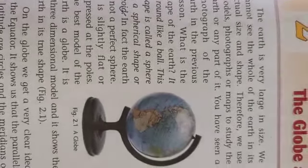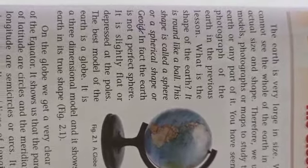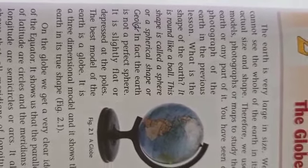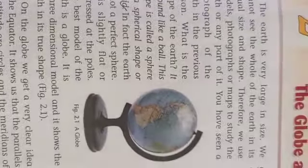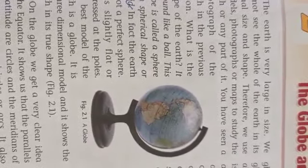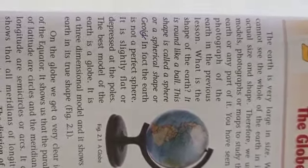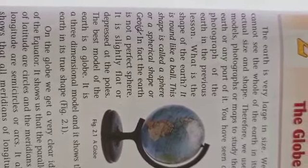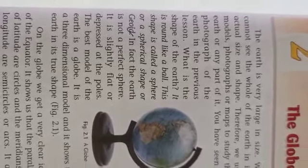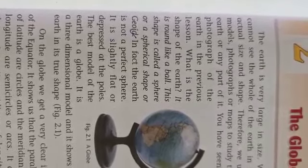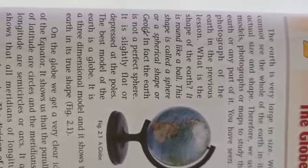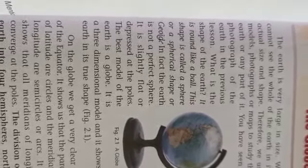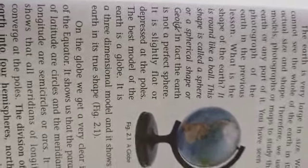A globe is difficult to carry or handle, and a globe doesn't show details. Only a part of the earth can be seen on the globe at one glance. It means at one time we can see only one part of the earth and the details of geographic features cannot be shown on a globe. These are the disadvantages or limitations of a globe.